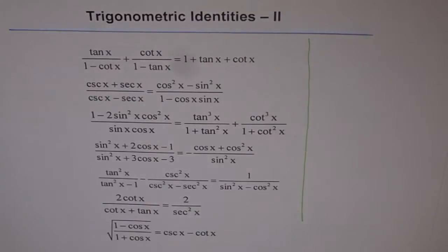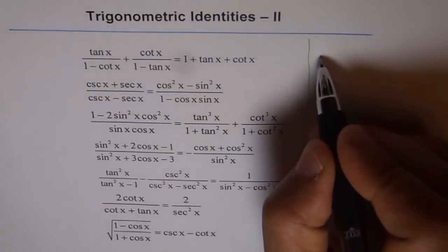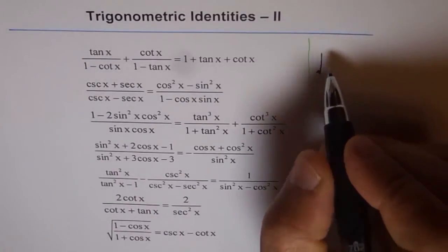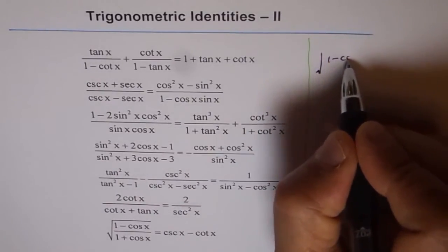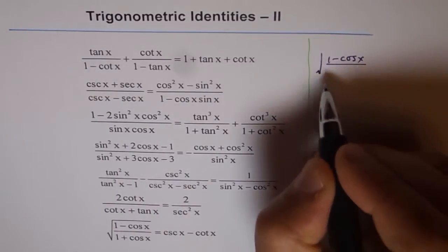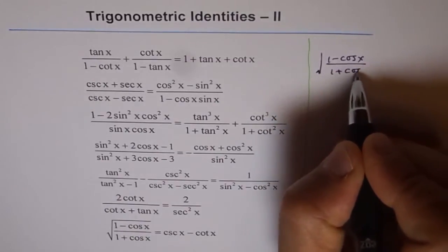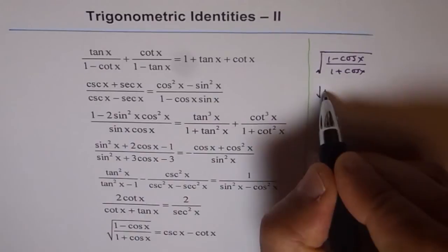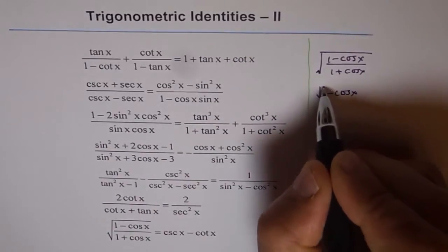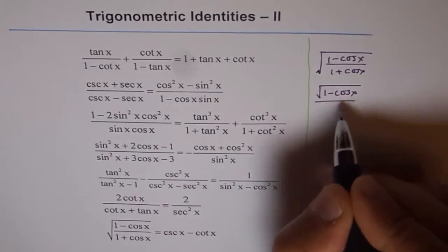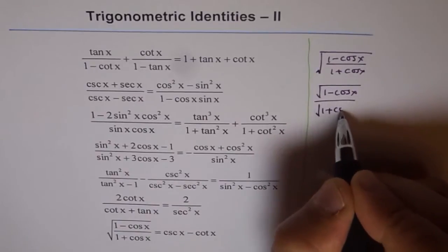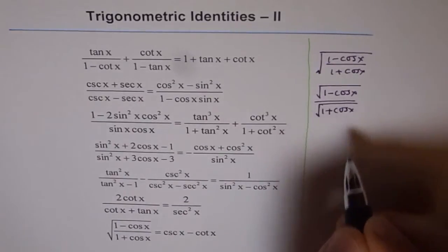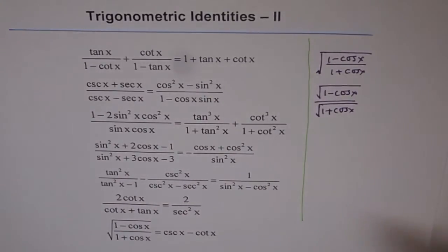So we will do it on this side. So we will start with the left hand side for this, which is square root of 1 minus cos x over 1 plus cos x. Now, this could also be written as square root of 1 minus cos x over square root of 1 plus cos x. At times, I have seen students being reluctant to write it like this. They just keep on going with this and at the end get lost.